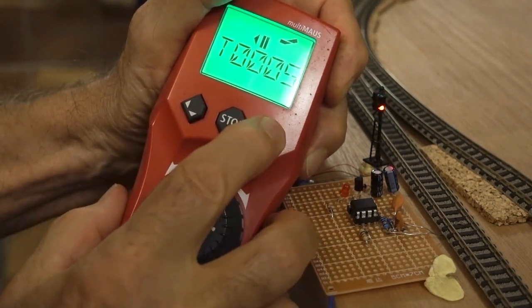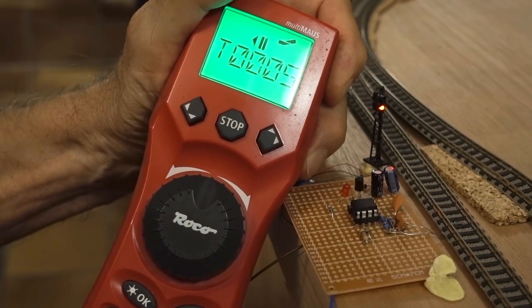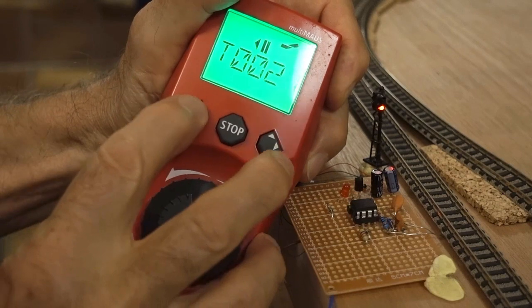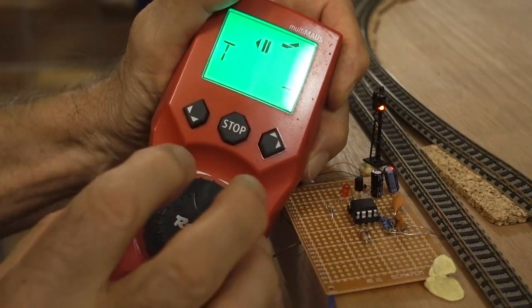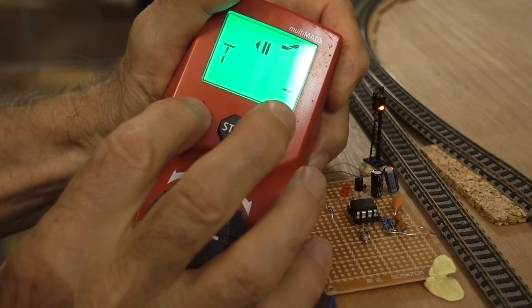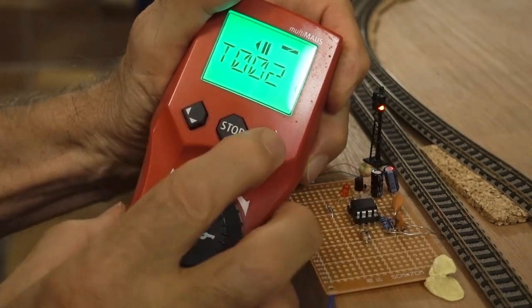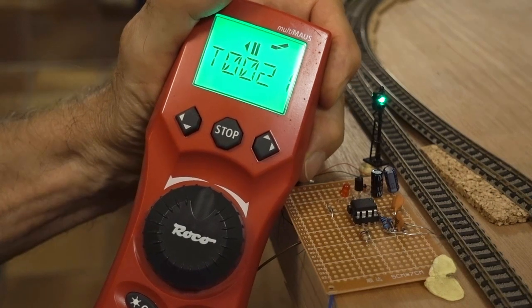Now if I set point number 5 thus, it's blocking the changing of the signal. So if I now set point number 5 straight, the signal will now change to green, because the point is in the train's favour.